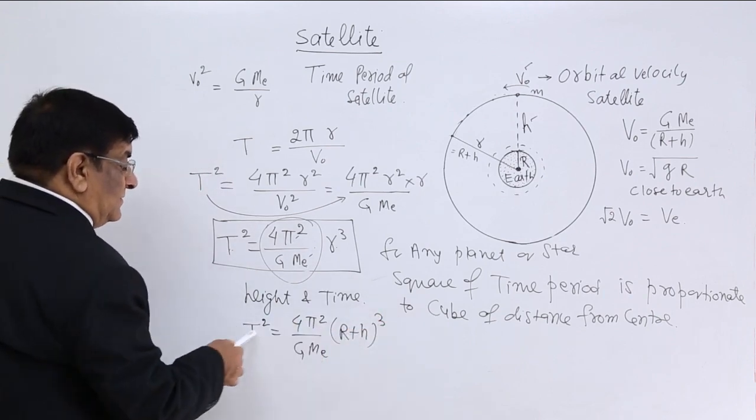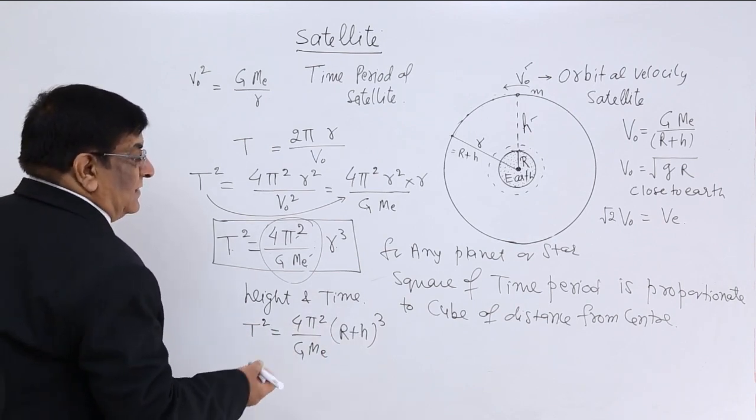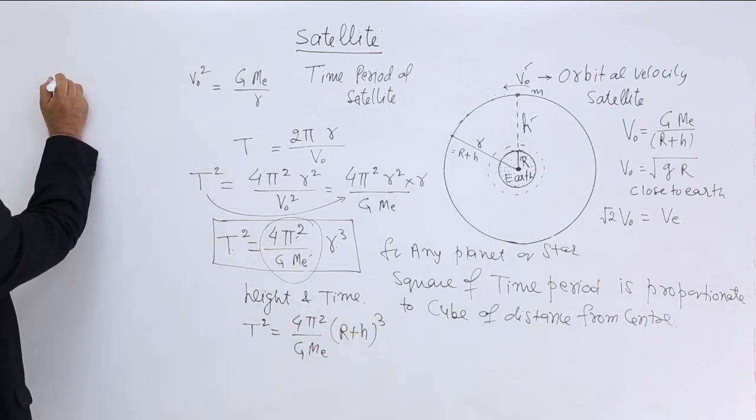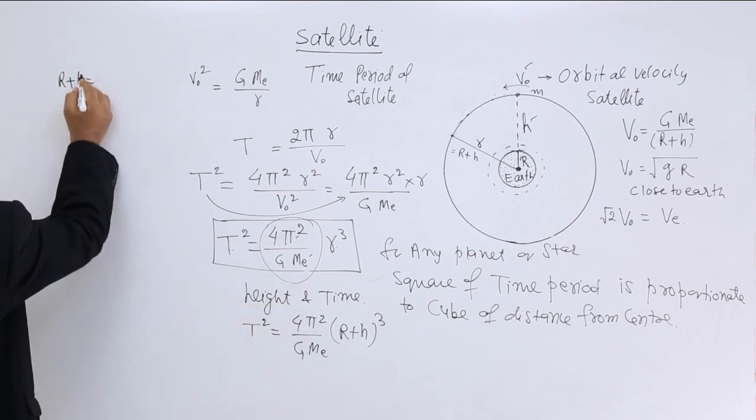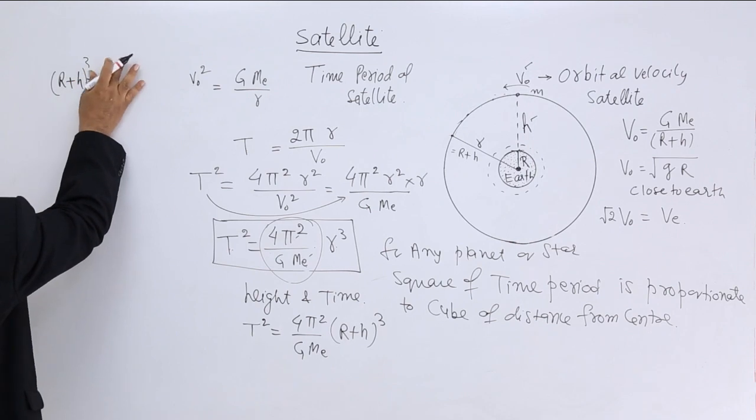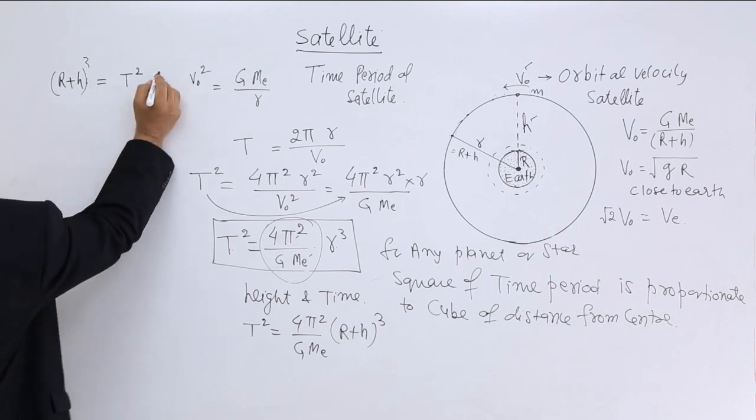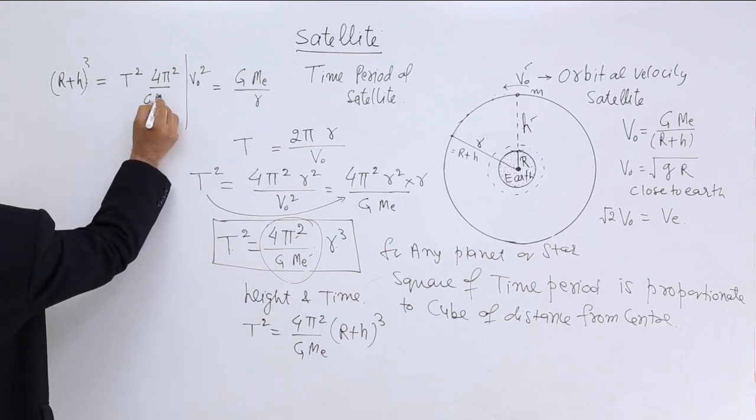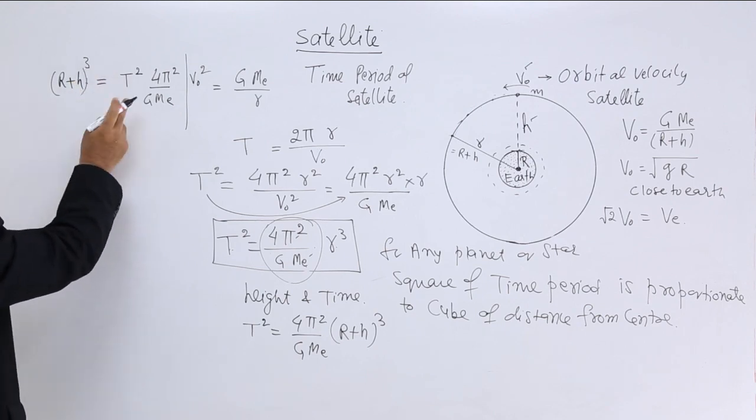How can we get the value for h? Take third root of both the sides. Yes, it will be a little complex, but we can always get it. Like, r plus h is equal to, q is equal to t square 4 pi square upon g into me.